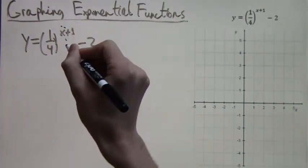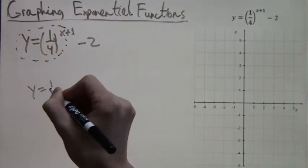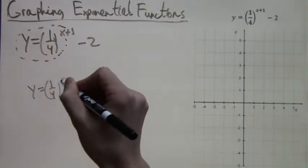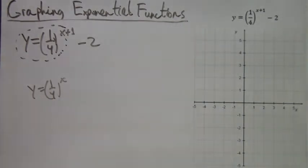And the very simplest expression from this that we can start working with is just y equals one fourth to the x. The other things, the plus one and the minus two, those will be shifts. So first, we're going to graph y equals one fourth to the x.